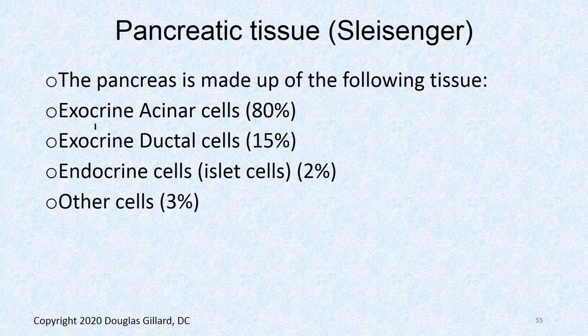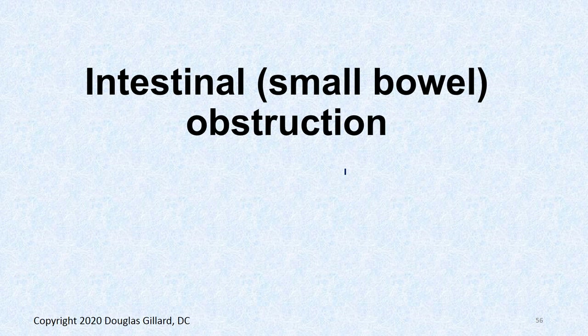Pancreatic tissue is made up of mainly exocrine acinar cells at 80%, exocrine ductal cells at 15%, and endocrine cells at only 2%. The endocrine cells produce glucagon and insulin. And that's a good place to stop — we'll see you in the next lecture.